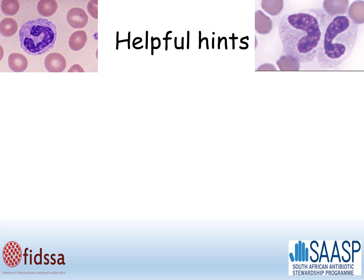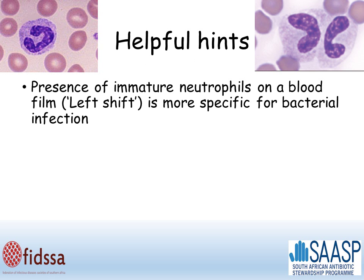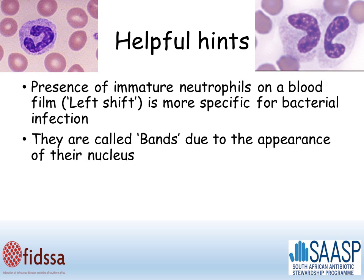The presence of immature neutrophils on a blood film, which is called left shift, is more specific for bacterial infection. These are called band forms due to the appearance of their nucleus, and you can see them in the pictures above. If there are greater than 10% band forms on a blood film, this is suggestive of bacterial infection without being definitive.